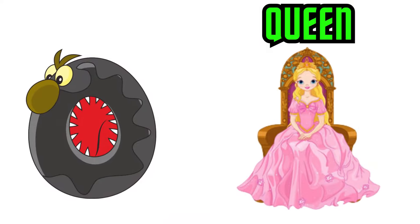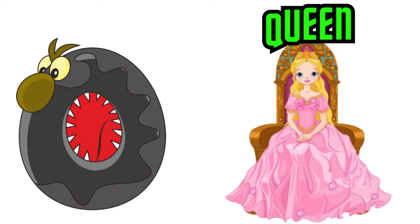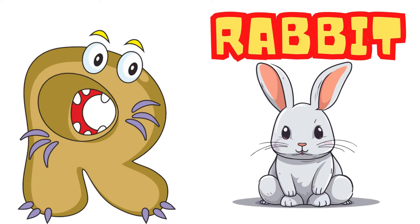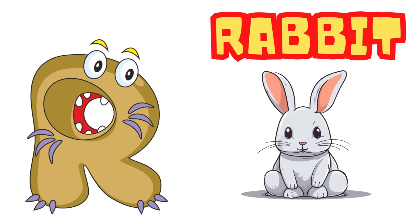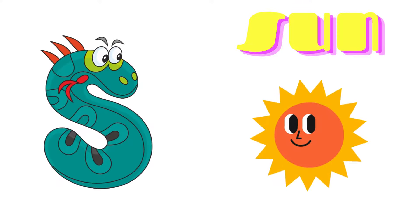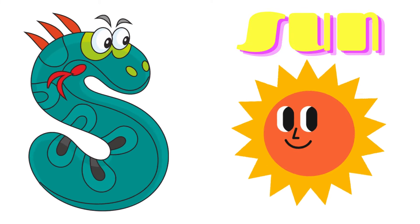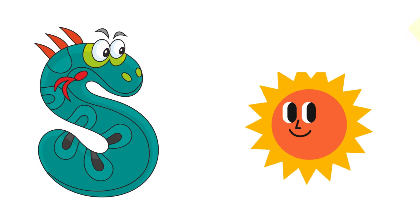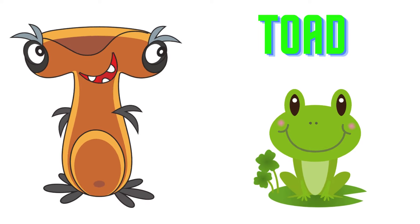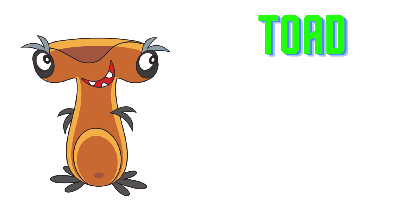Q is for Queen, Q-Q-Queen. R is for Rabbit, R-R-R-Rabbit. S is for Sun, S-S-Sun. T is for Toad, T-T-Toad.